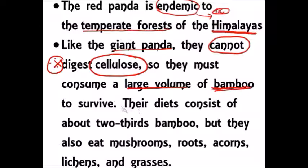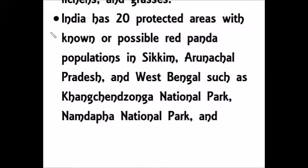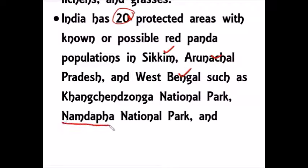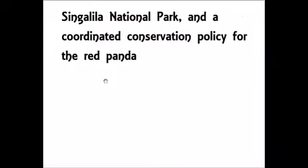Another important Prelims point: India has 20 protected areas with possible red panda populations, mainly in Sikkim, Arunachal Pradesh, and West Bengal. Some important national parks include Namdapha National Park, Khangchendzonga National Park, and Singalila National Park, among others.